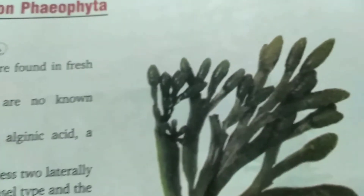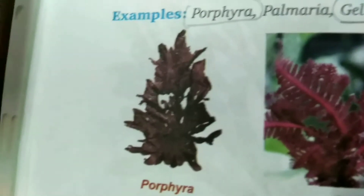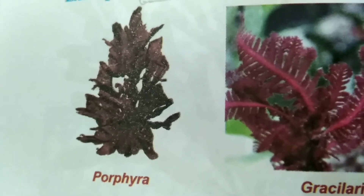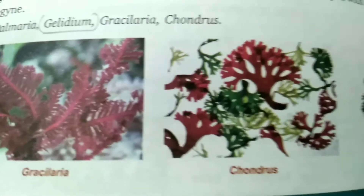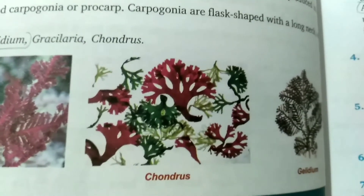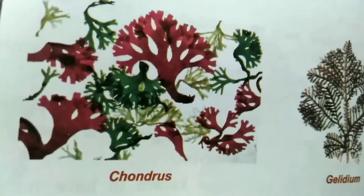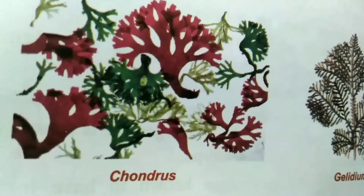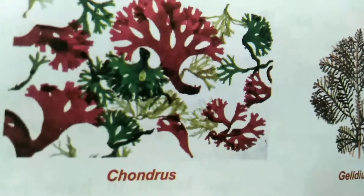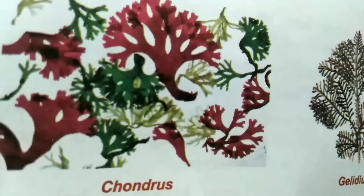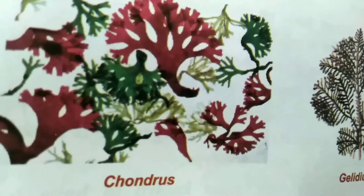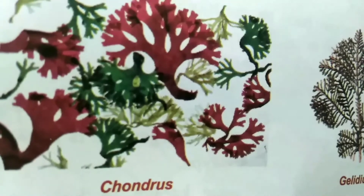Then Rhodophyta — the diagrams shown are Porphyra, Chondrus, and Gelidium. You can see the diagram of Gelidium. These are the red algae. Their photosynthetic pigment is chlorophyll A and D. Their reserve food is floridean starch.